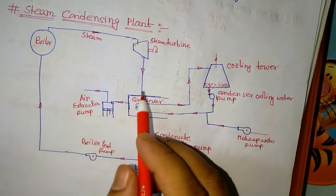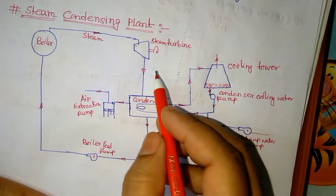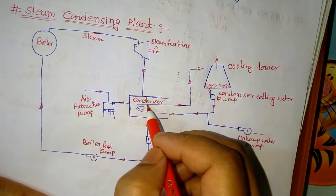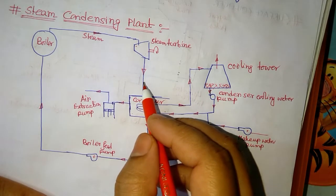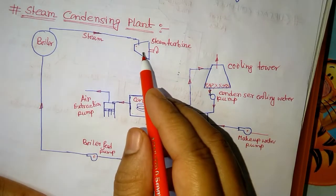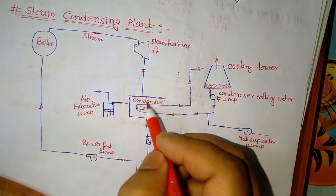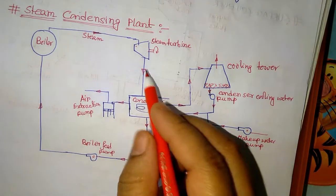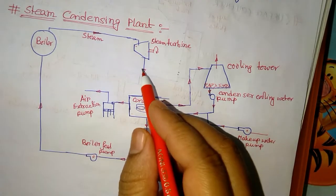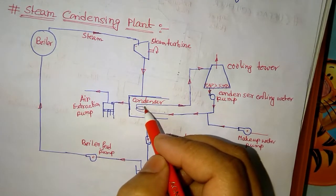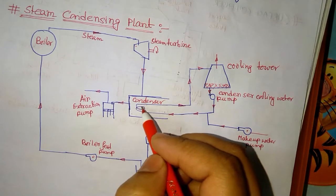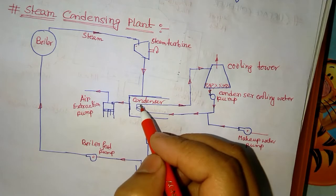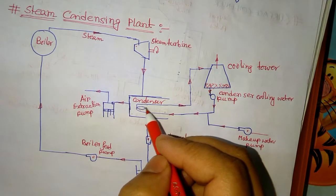Due to many joints and flanges in the turbine as well as the condenser, there is leaking of atmospheric air into the steam. That air enters into the condenser along with the steam. As a result, there are many effects on the performance as well as the component lifetime.